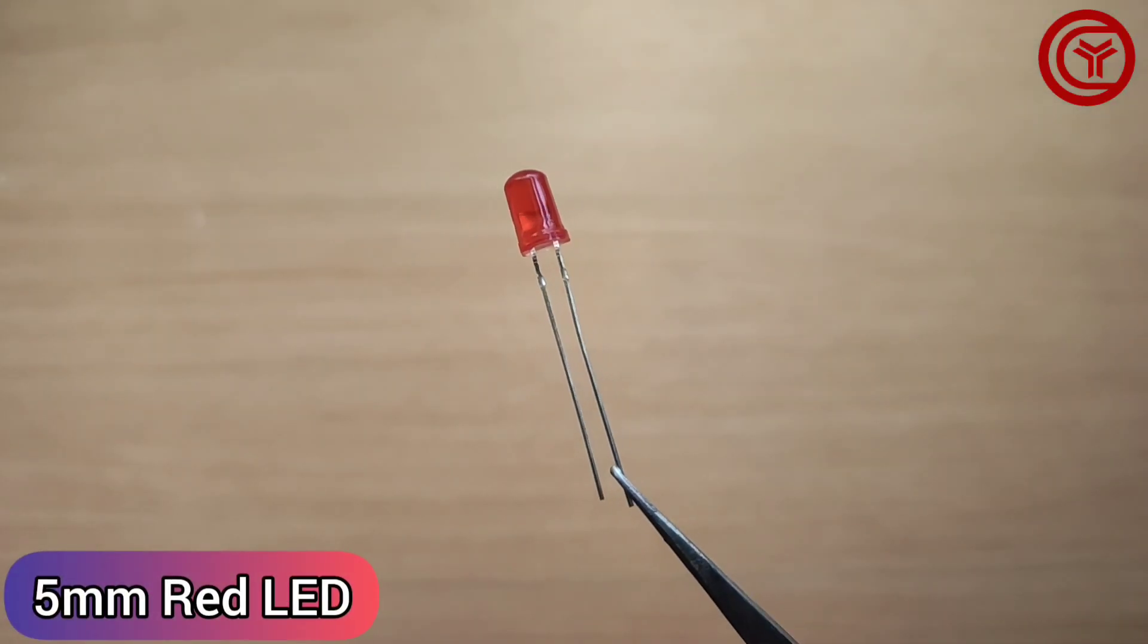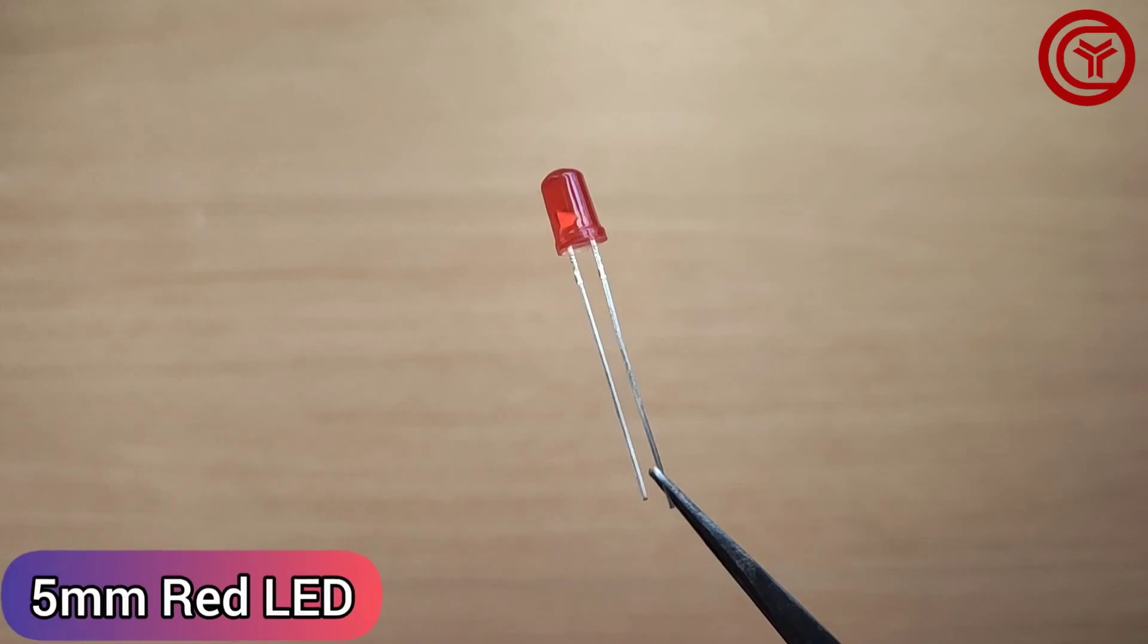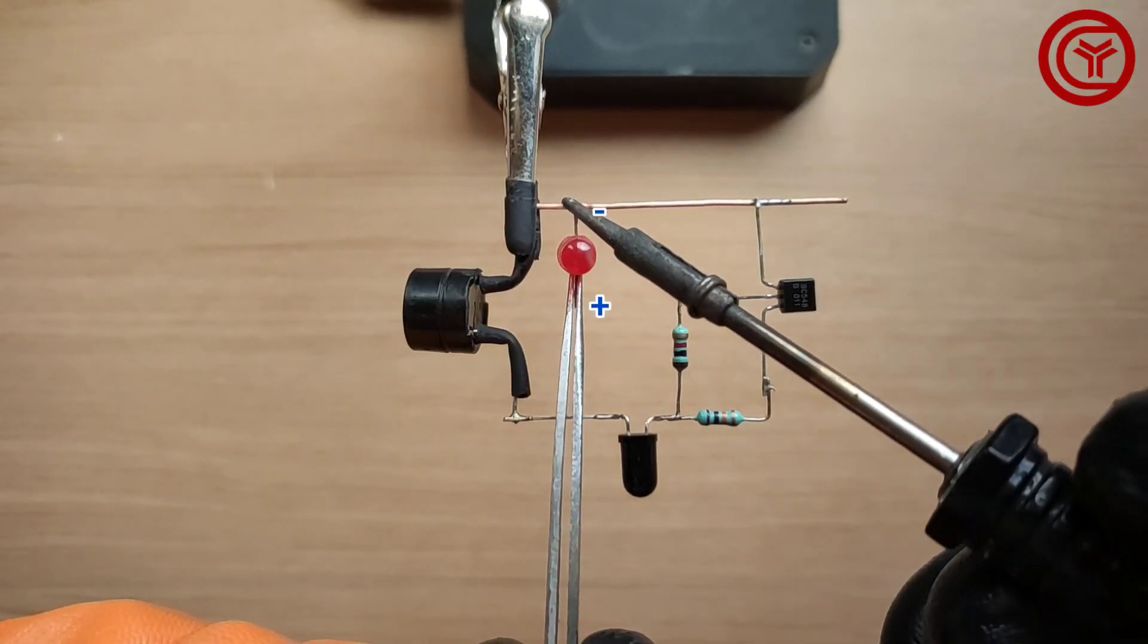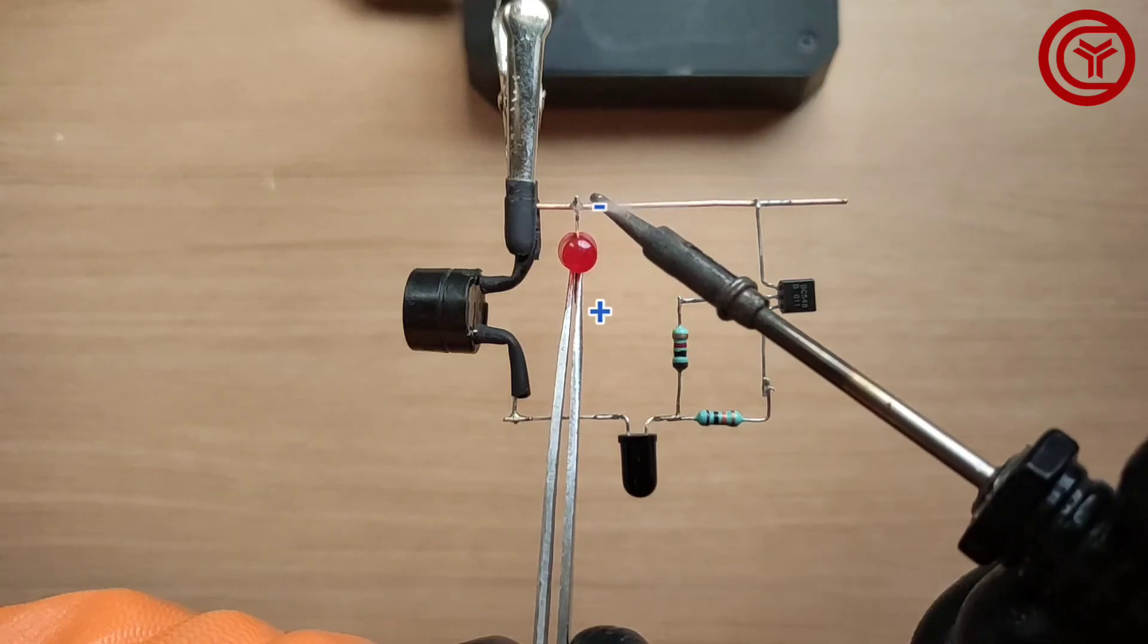Now take a red LED. Solder the LED negative on the copper wire connected to transistor collector and buzzer negative.